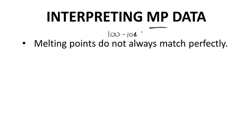Melting points are normally reported in an experimental procedure using the following format: MP, then the range of the melting point value, followed by parentheses showing the literature value if any, with a superscript for the reference. That's a reference citation that will be listed separately in the references section.